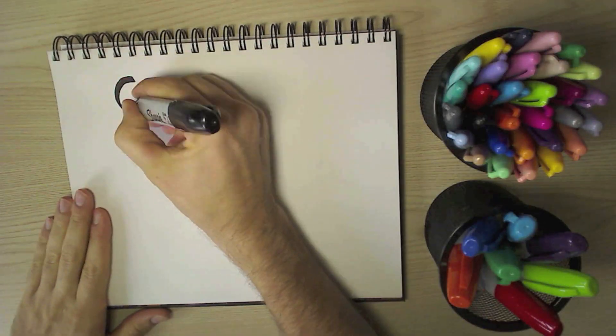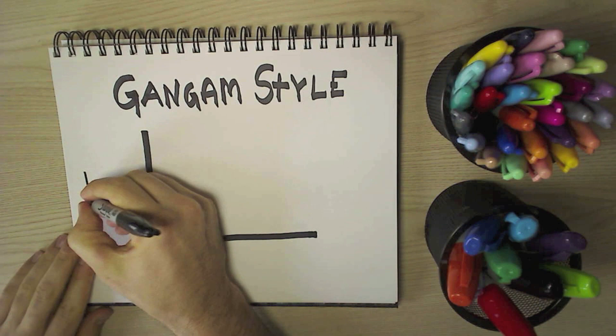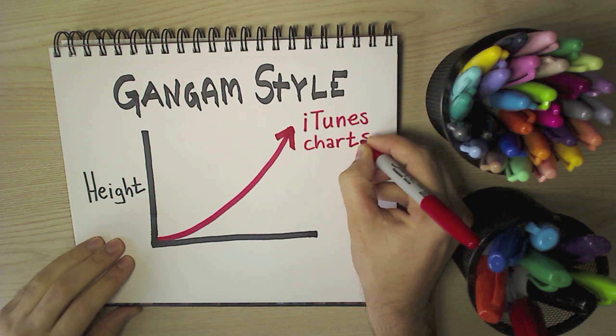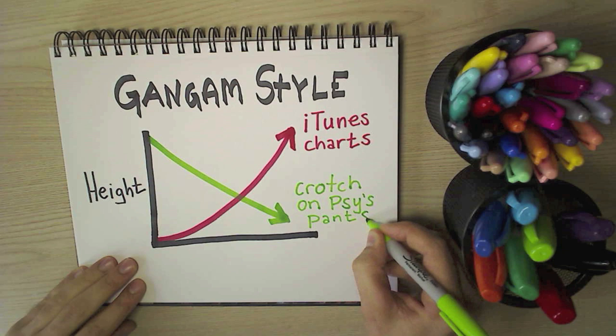So Gangnam Style recently became the first K-pop song in history to hit number one on the iTunes charts, which is the exact opposite direction traveled by the crotch line on the guy's pants in the video, which gets lower and lower as the song goes along.